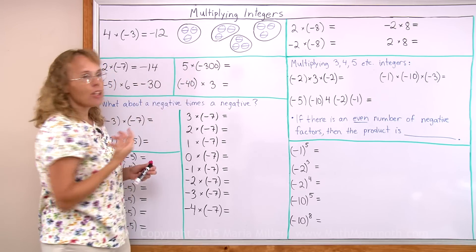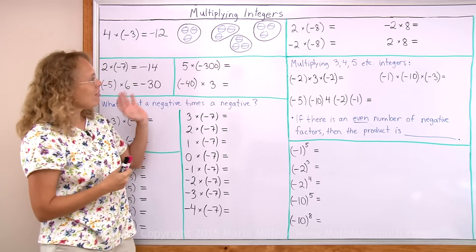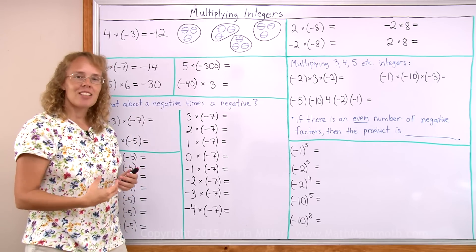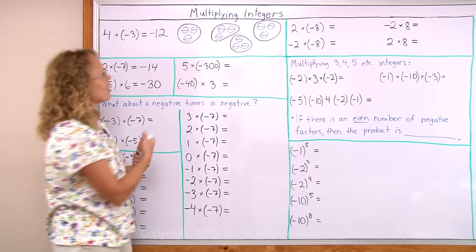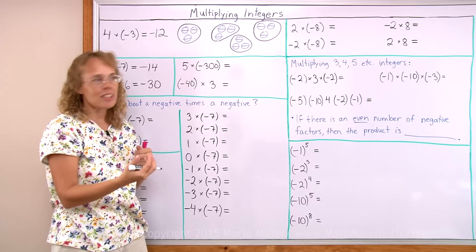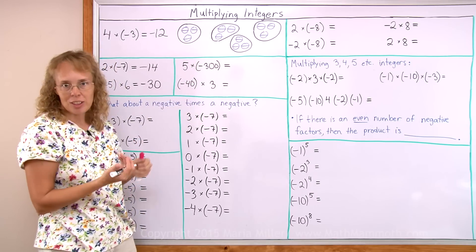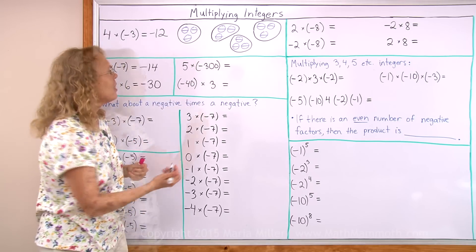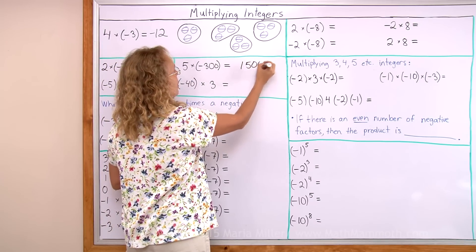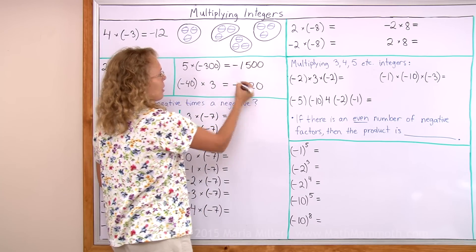With these problems also, what you can do simply is just multiply 5 times 300 and then give your answer as negative, because it is like 5 groups of 300 negatives. Or this one is like 3 groups of 40 negatives — the answer is negative. 5 times 300 is 1500, but it's negative. Or here, negative 120.